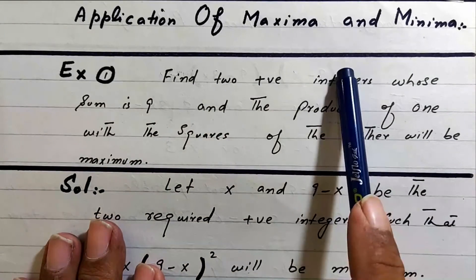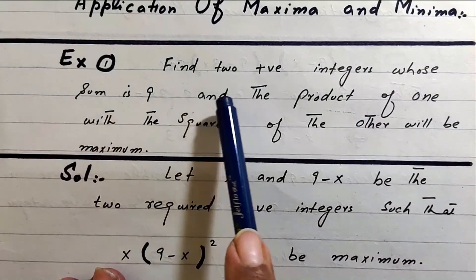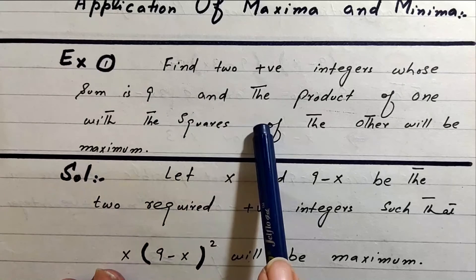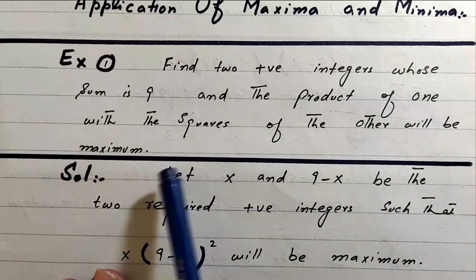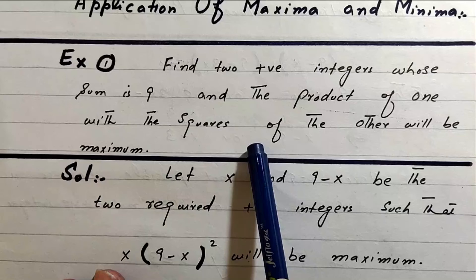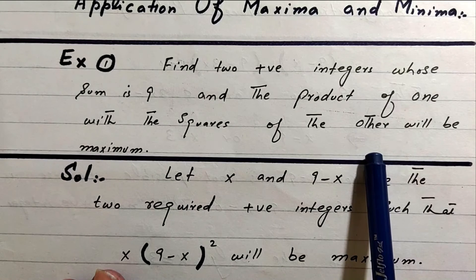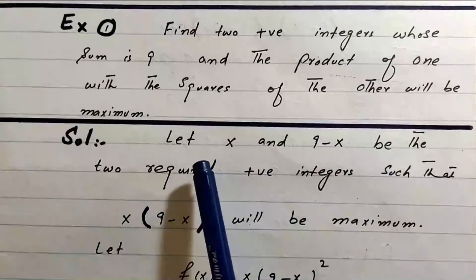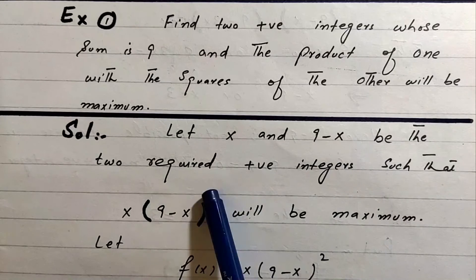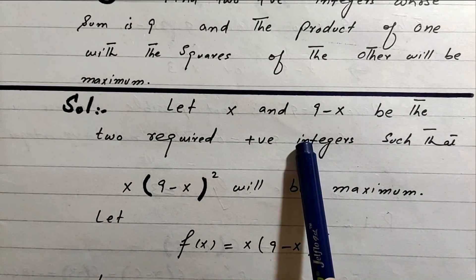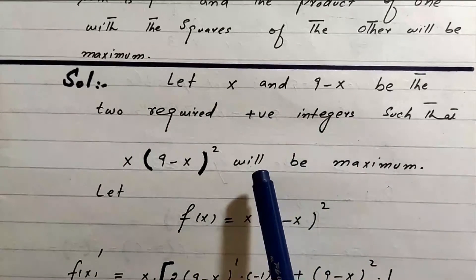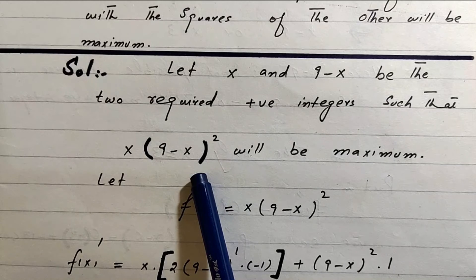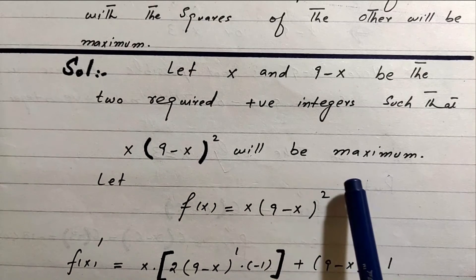Application of maxima and minima. Example 1: Find two positive integers whose sum is 9 and the product of one with the square of the other will be maximum. Let x and (9 minus x) be the two required positive integers.